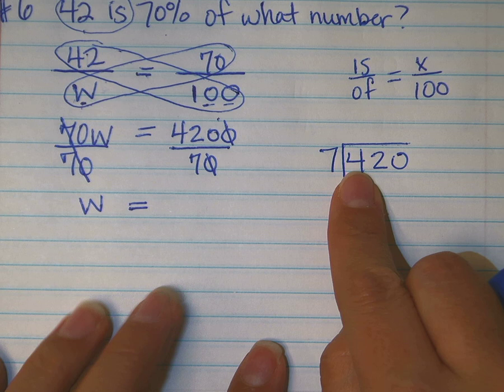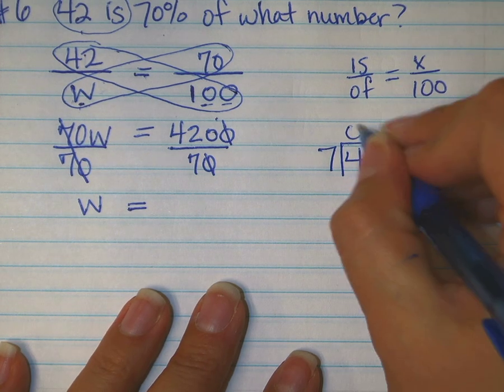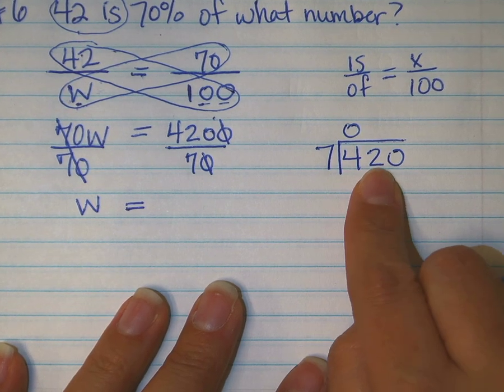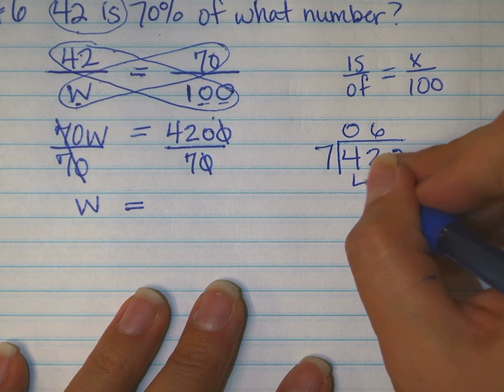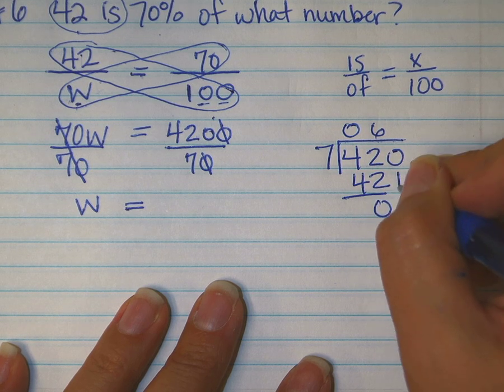7 goes into 4 how many times? 0. 7 into 42? 6. 6 times exactly. So 60.